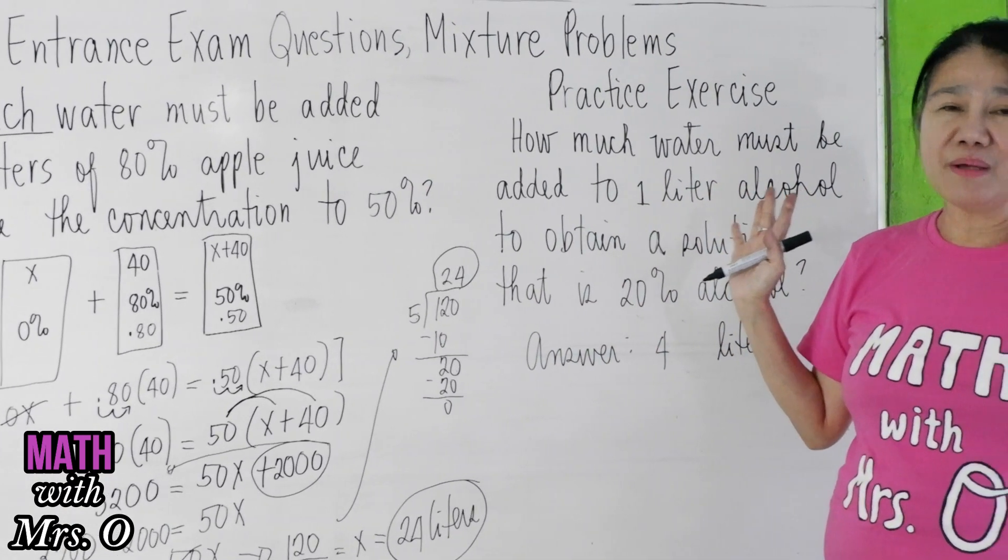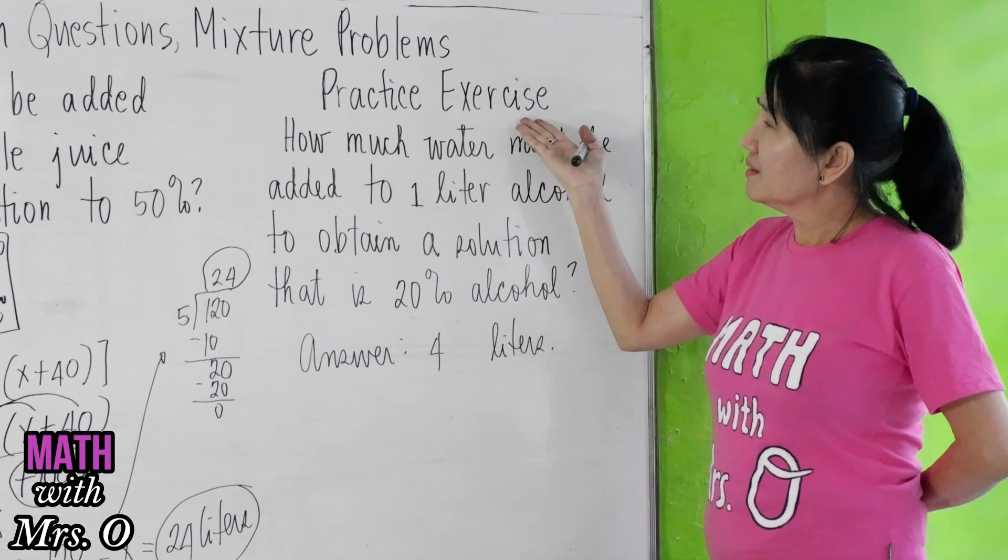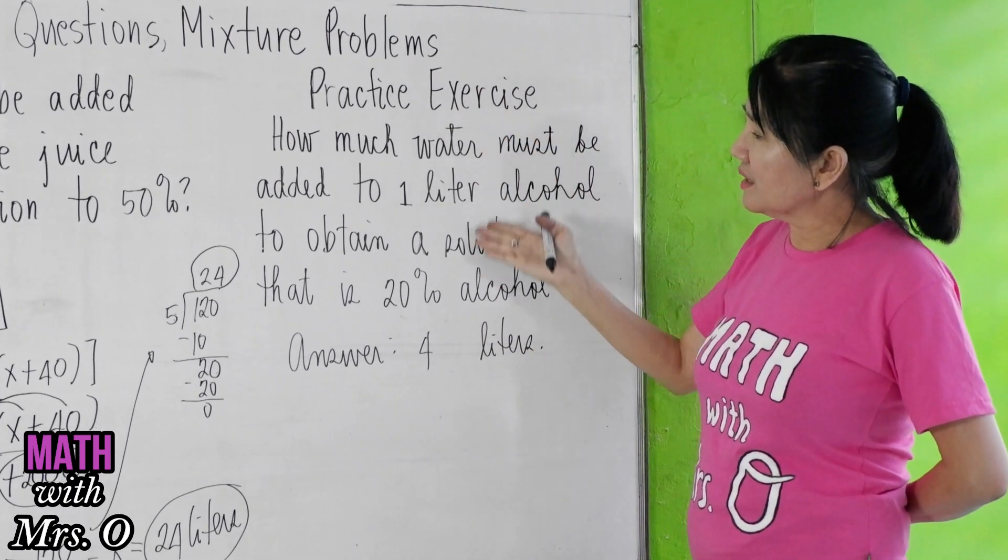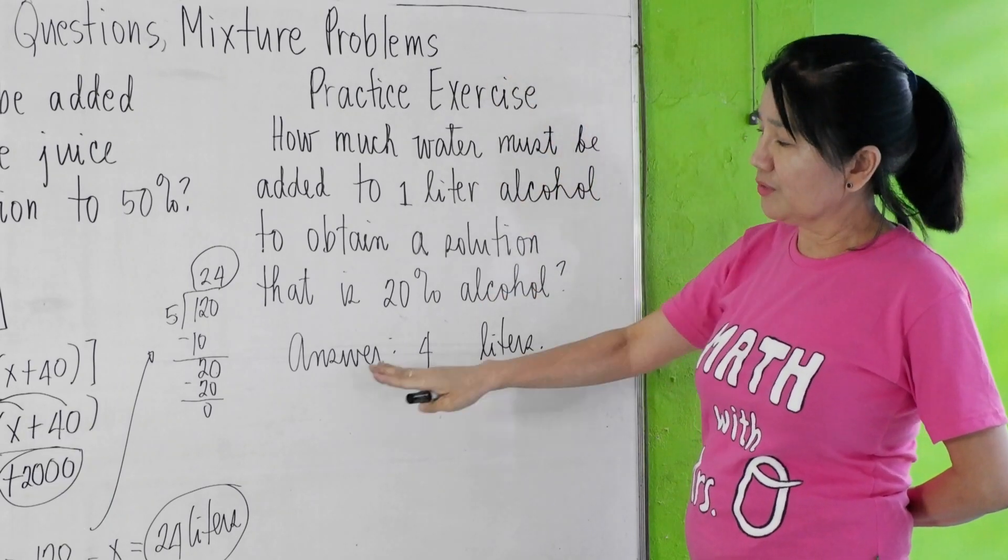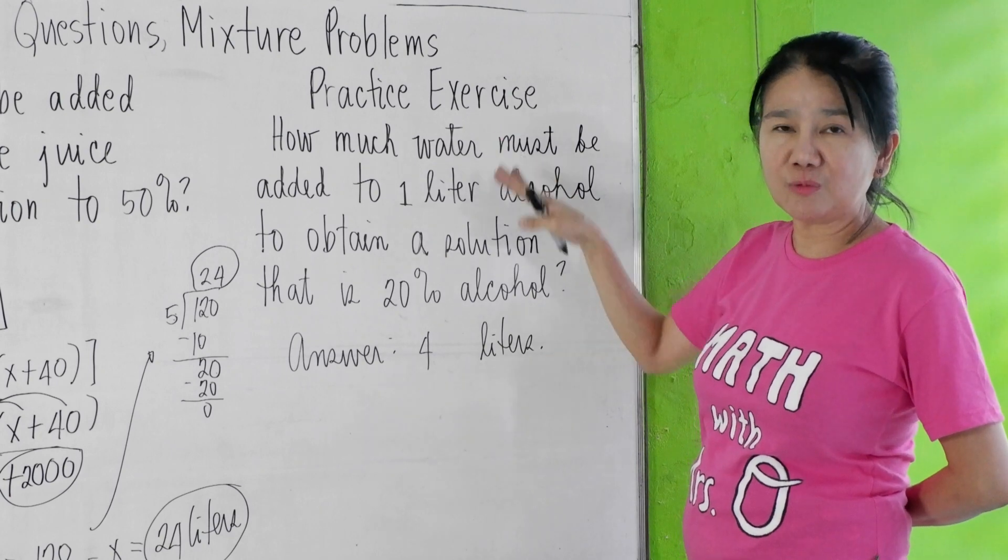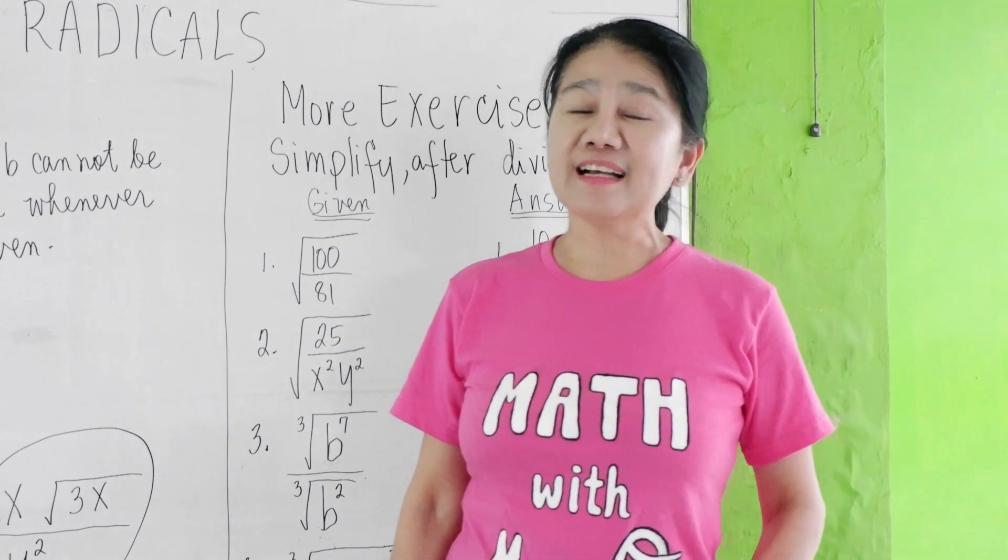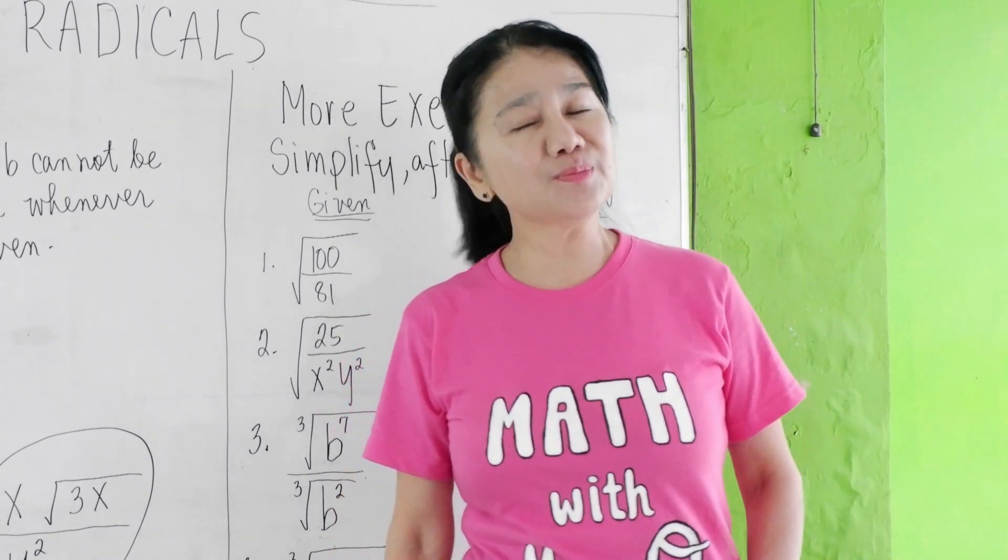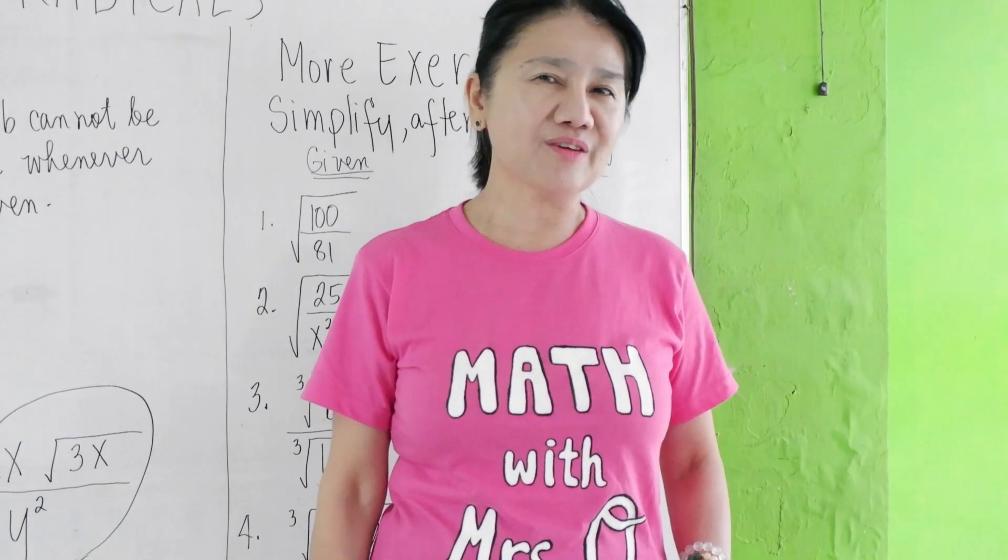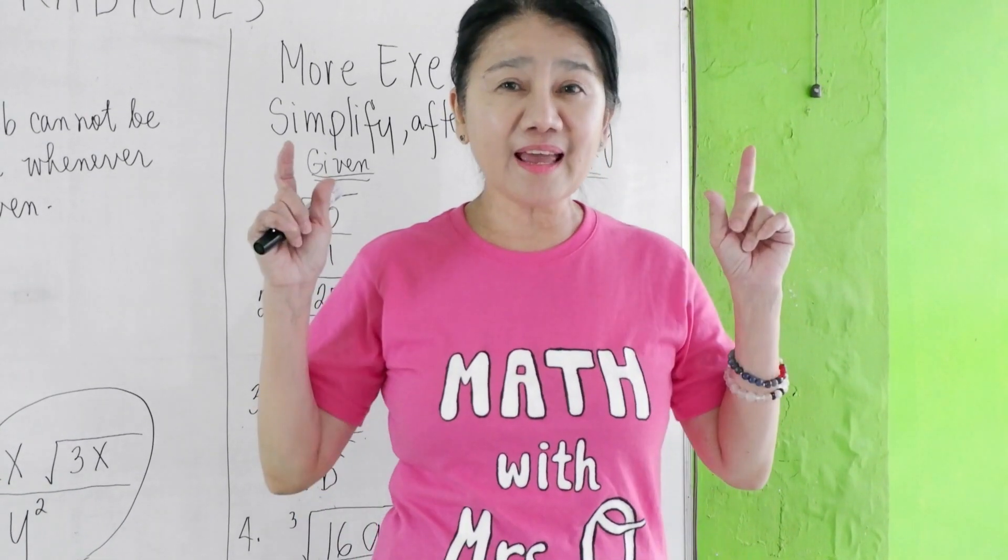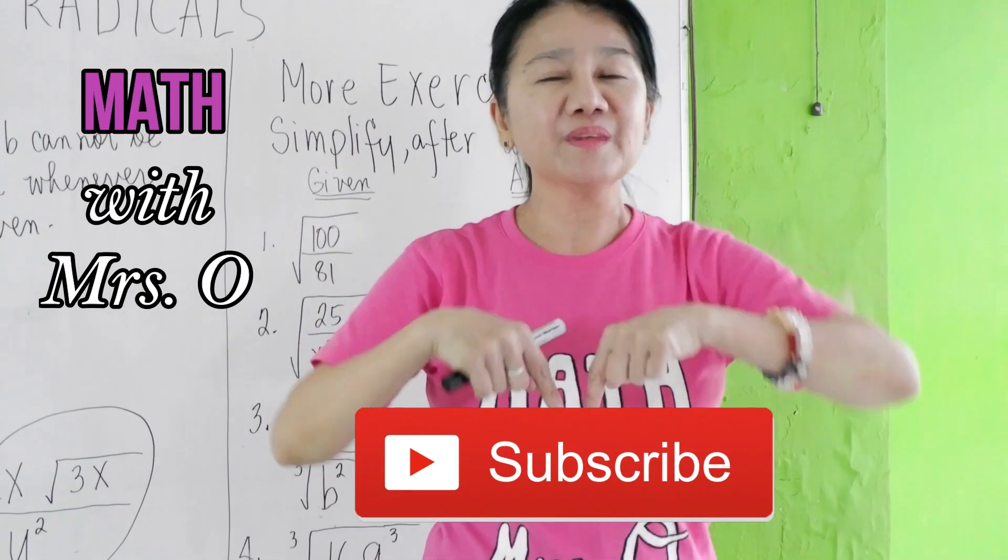Now, remembering math, practice makes perfect. So I wrote here another mixture problem which you can solve, and I also provided the answer so that you can compare your answers. Before we end, you always have to remember: add kindness, subtract judgment, multiply understanding. It was Mrs. O's Good Life Equation. Don't forget to click the bell button and subscribe. Thank you.